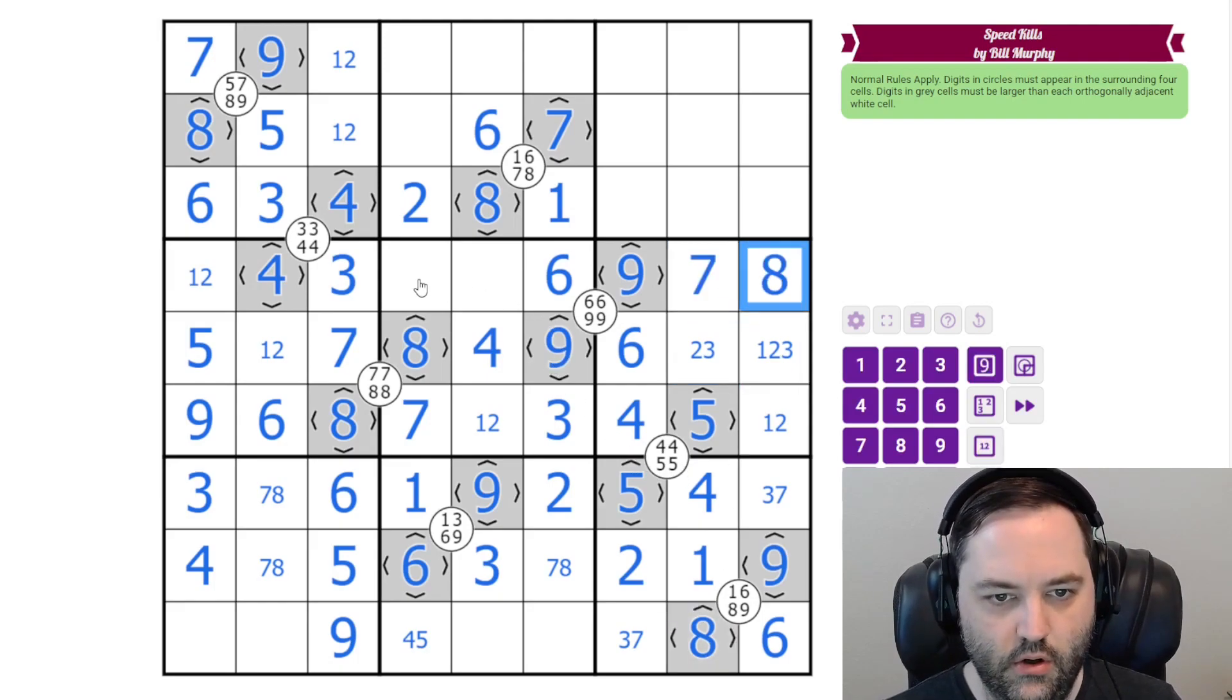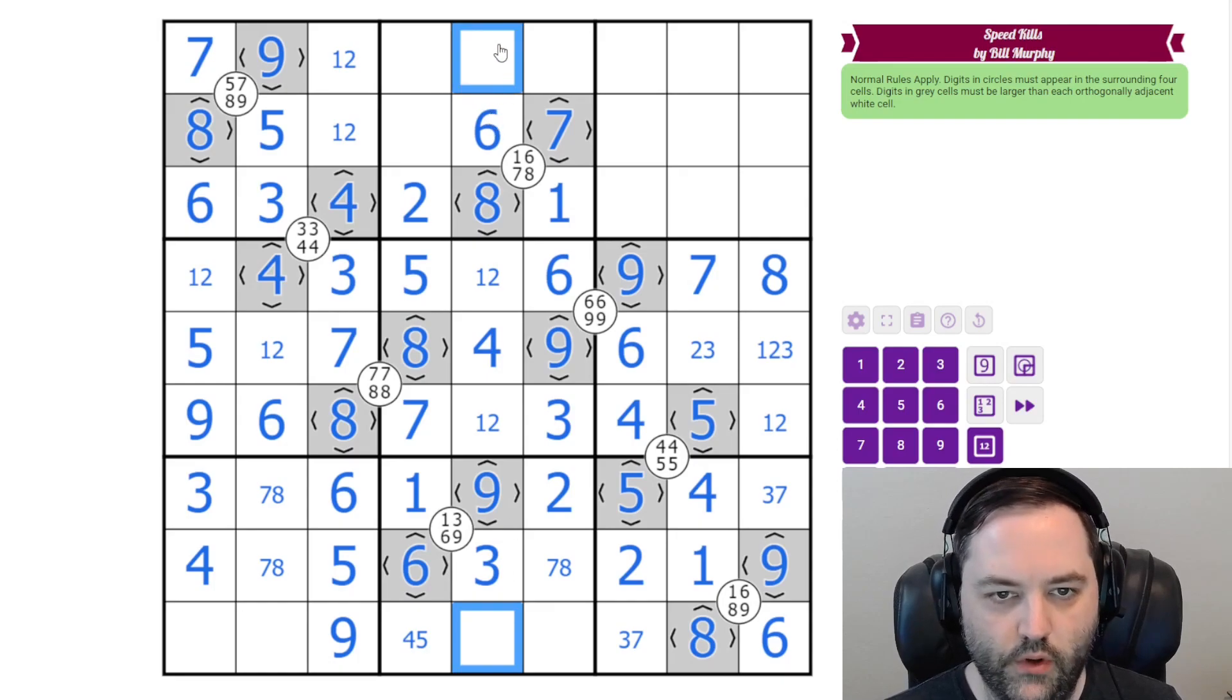We need 7 and 8 here. These are 1, 2 and 5, and this has to be 5. That's 1, 2. Gives us another 1, 2 pair.